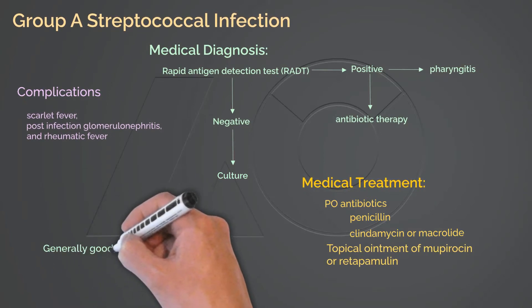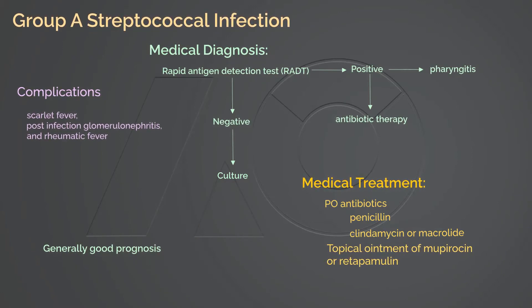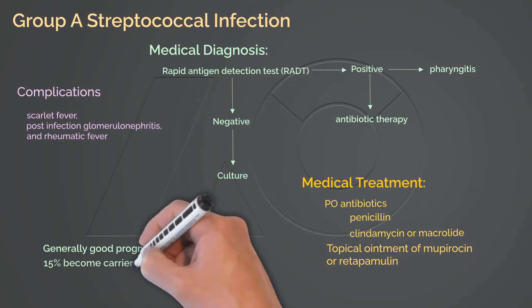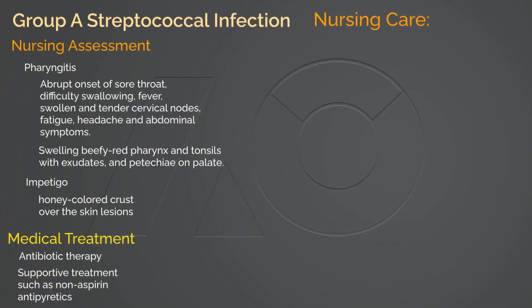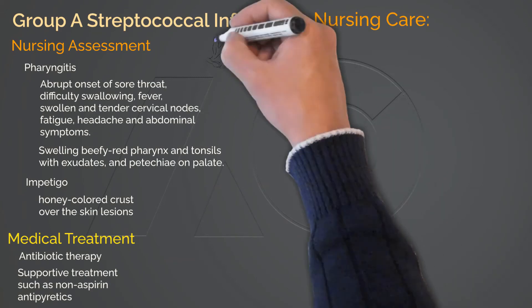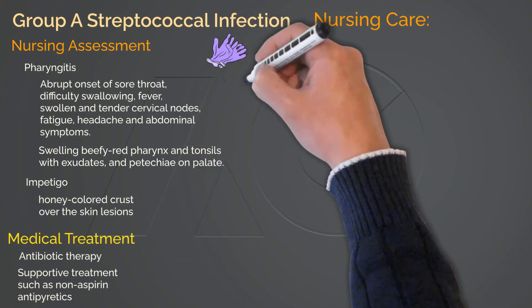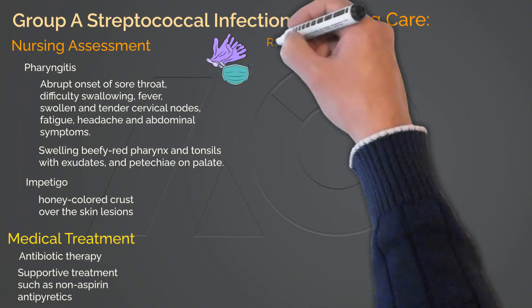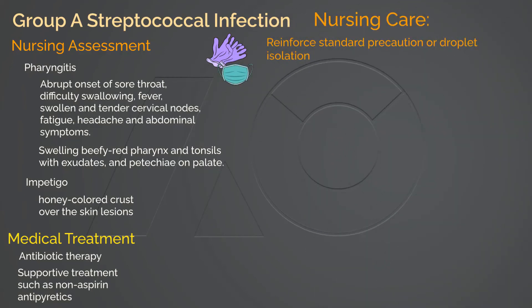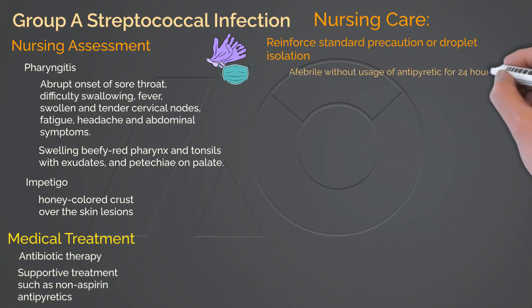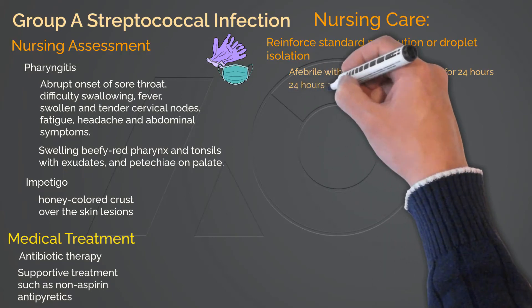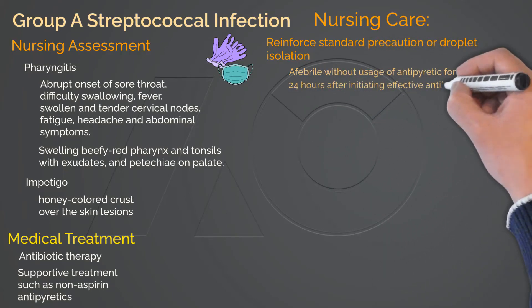Prognosis is usually good as long as antibiotics are used. However, 15% of infected children become chronic carriers. Reinforce standard and droplet isolation for pharyngitis and contact isolation for impetigo until the communicable period has passed. The patient should be kept isolated at home until the following criteria are met: afebrile without usage of antipyretics for 24 hours, and 24 hours after initiating effective antibiotics.